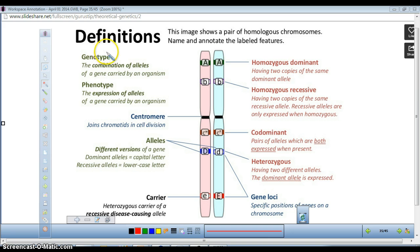Remember, genotype has to do with the different alleles that are found on homologous chromosomes. What are some examples of genotypes?